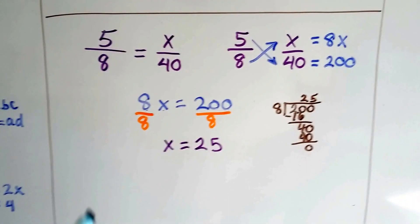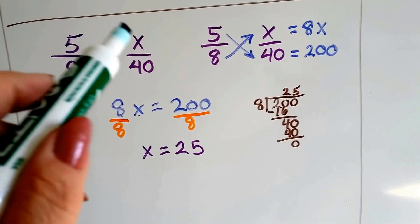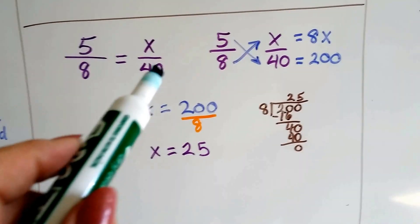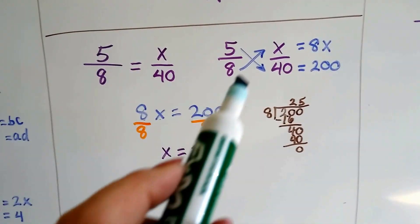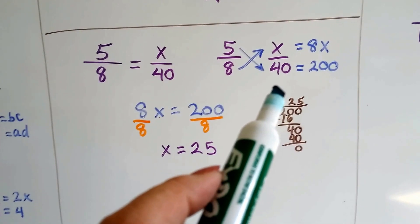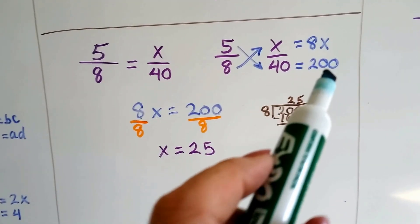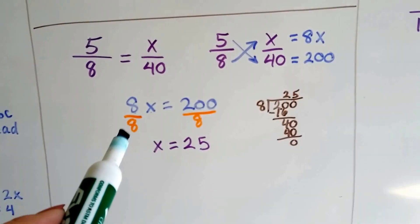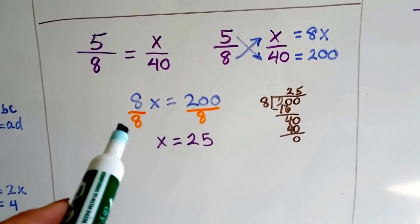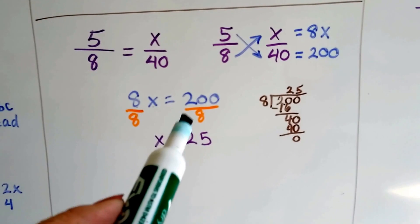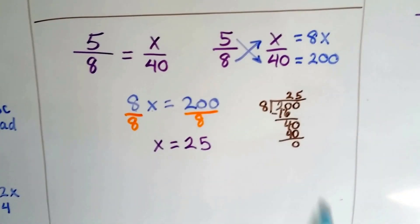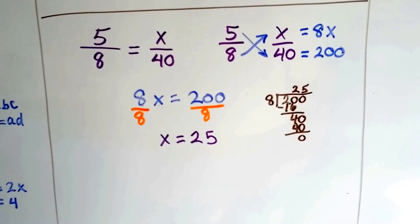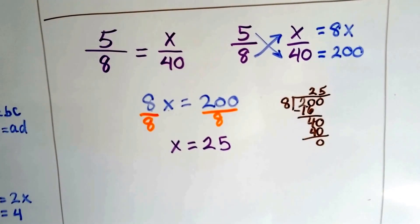See how easy that was? Let's try it again real quick. We have 5/8 equals x over 40. All we have to do is 5 times 40 and 8x to get our equation, our equivalent products. 5 times 40 is 200 and 8x is 8x. We have 8x equals 200. We can divide both sides by the coefficient and 8 goes into 200 25 times with a little long division on the side. We know that x equals 25.